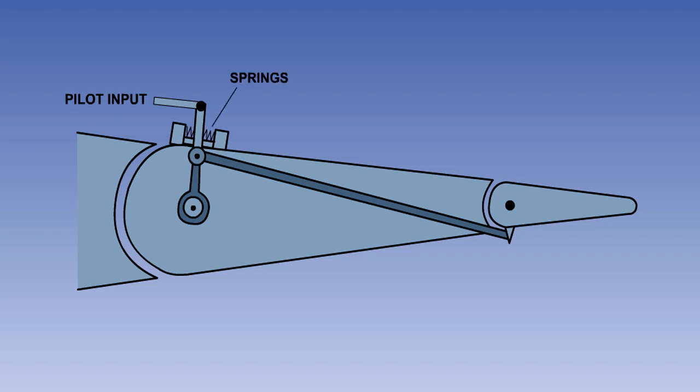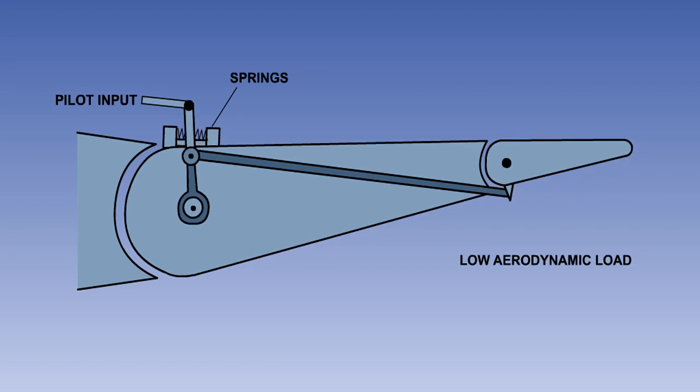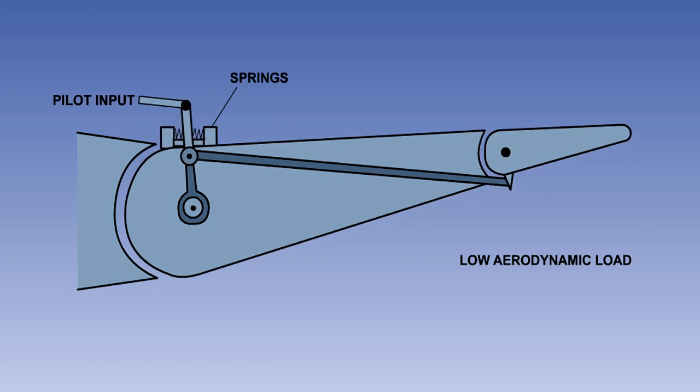The spring tab is used mainly to reduce control loads at high air speeds. The pilot's control movement is transmitted to a lever pivoted on the primary control surface, but not directly operating it. Operation of the control surface is via springs. With low aerodynamic loads, the springs are strong enough not to be compressed, so the control surface moves with control input, and there is no change in the position of the trim tab relative to the control surface. The full load is felt by the pilot.